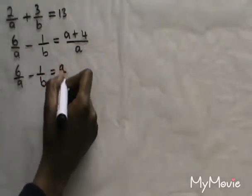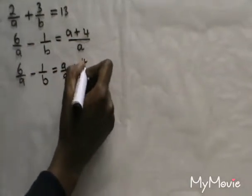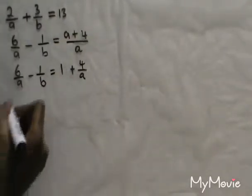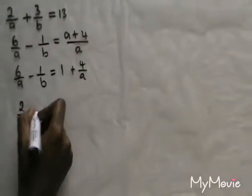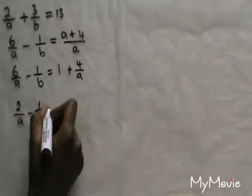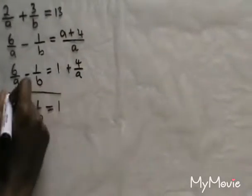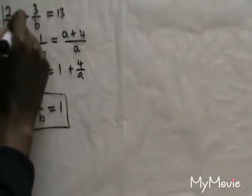So I have 6 over A minus 1 over B, which equals A over A plus 4 over A. We know that A over A is just equal to 1, so this 4 over A I can bring over to the other side and rewrite this equation as 2 over A minus 1 over B equals 1. So these are the two equations that I essentially have.